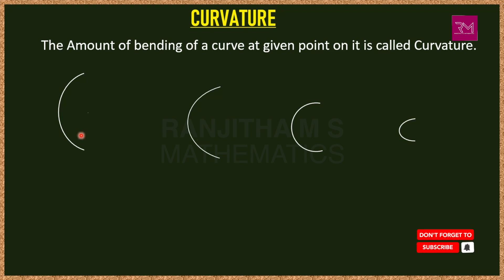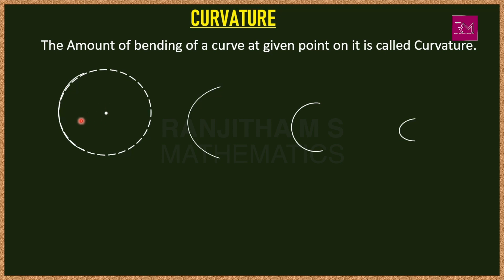Now we can easily understand the concept of radius of curvature. Using the first curve, if we form a circle, that circle is the circle of curvature. The center of that circle is the center of curvature, and the distance from the center of curvature to any point on the circle of curvature is the radius of curvature. Similarly, if we form a circle using the second curve, that circle is the circle of curvature, with its own center and radius of curvature.